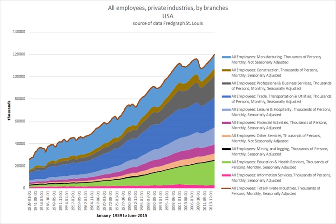In sales jobs and real estate positions, the employee may be paid a commission — a percentage of the value of the goods or services that they have sold. In some fields and professions, employees may be eligible for a bonus if they meet certain targets. Some executives and employees may be paid in stocks or stock options, a compensation approach that has the added benefit, from the company's point of view, of helping to align the interests of the compensated individual with the performance of the company.